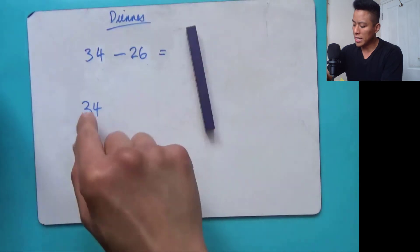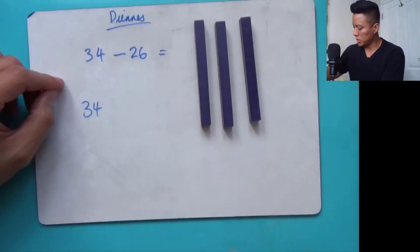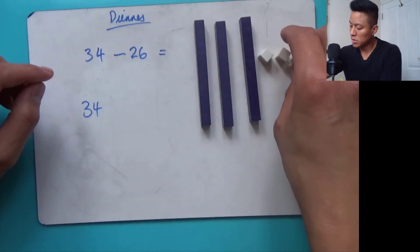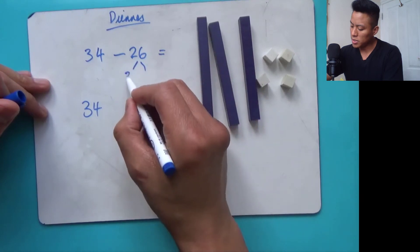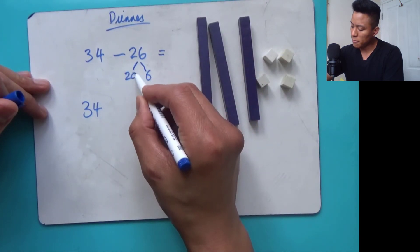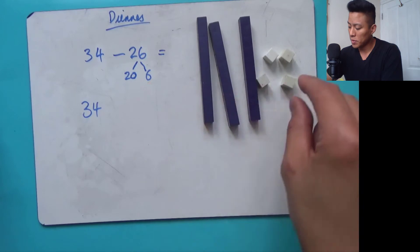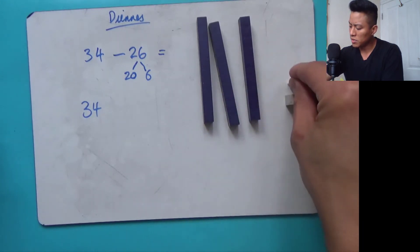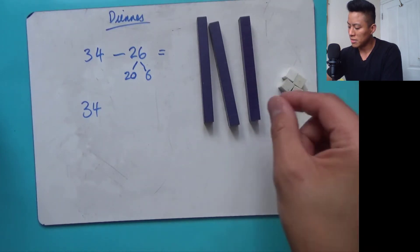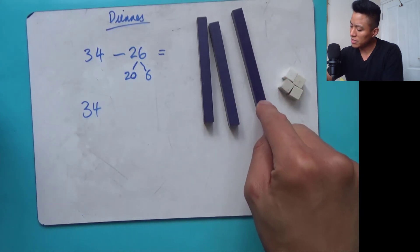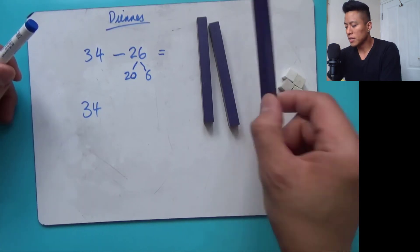I've got my three tens and my four ones. I'm going to partition the subtrahend into 20 and six. Then I'm going to subtract six from the ones — one, two, three, four. Now this is where the problem happens. I've got my four and I want to subtract six. I only need the ones here. I can't just take this whole ten away — I'm going to need to exchange.